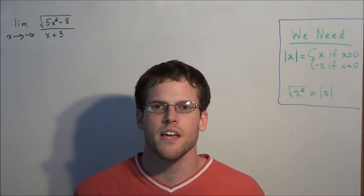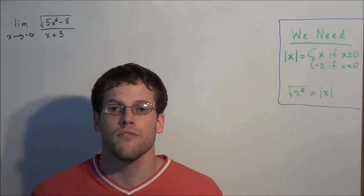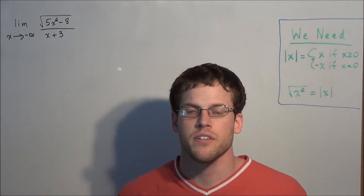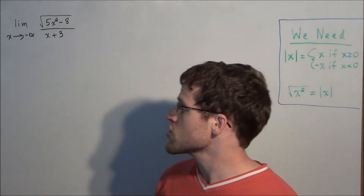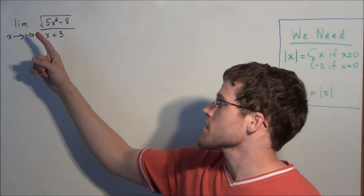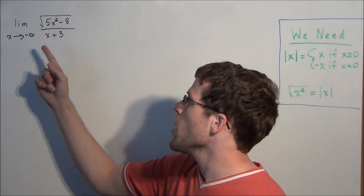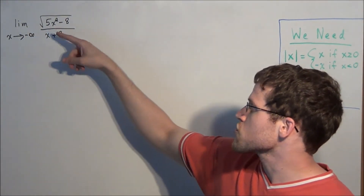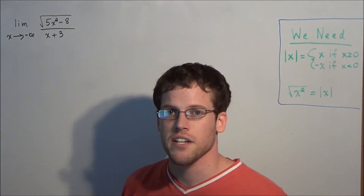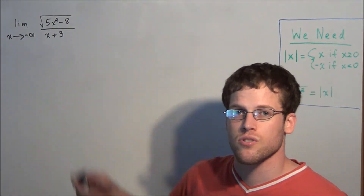Hi, my name is Vincent and today I want to take a look at finding the limit of an expression involving a radical. We have: find the limit as x approaches negative infinity of the square root of 5x squared minus 8, divided by x plus 3.